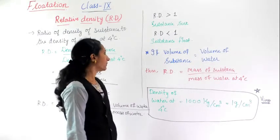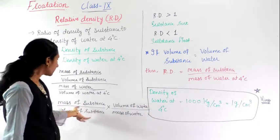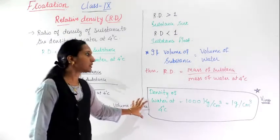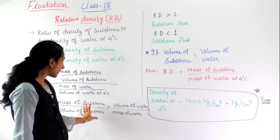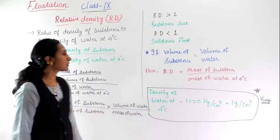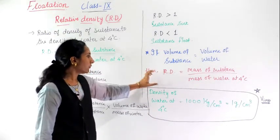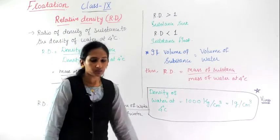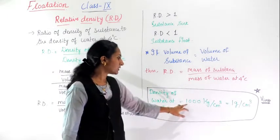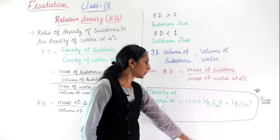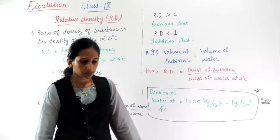If the volume of the substance and the volume of water are the same, the volume terms cancel out, and you get: RD equals mass of substance divided by mass of water at four degrees Celsius. The density of water at four degrees Celsius used for solving problems is 1000 kg per meter cube, which can also be written as 1 gram per centimeter cube.